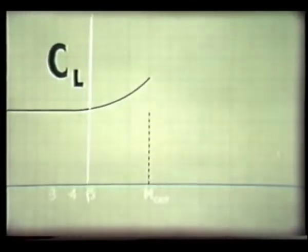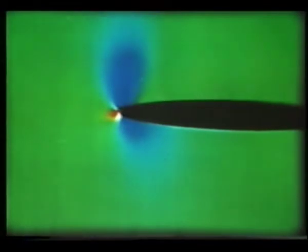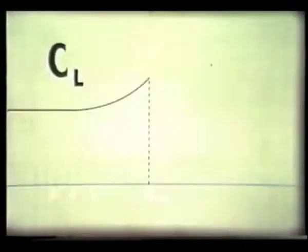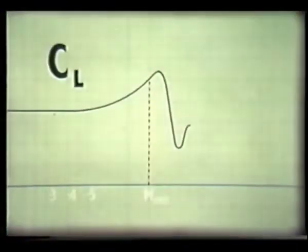What happens to lift at the shock stall? It drops suddenly. Watch the behavior of the lift coefficient: like the drag coefficient, it's constant at low speeds. Somewhere below M-crit it starts to increase slightly, because the air is becoming less dense as it speeds up over the curvature of the wing. But just above M-crit, flow separation makes it plunge suddenly downwards. Later on, it increases slightly, then falls again.